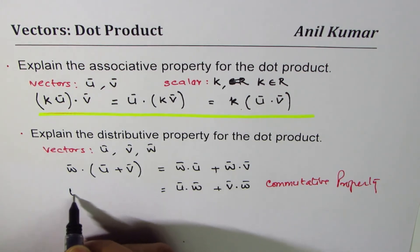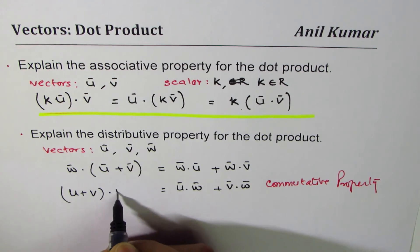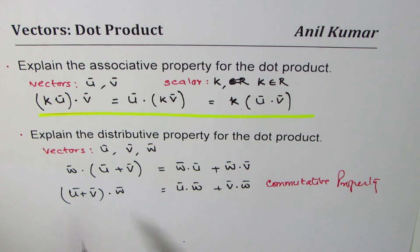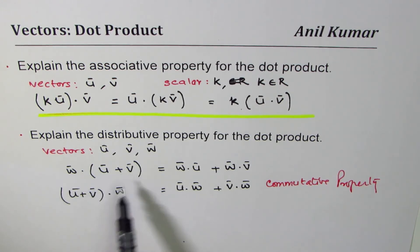That (u+v)·w - the distributive property says that the dot product of a vector with sum of the other two could be written as shown here. That is the distributive property for the vectors. I'm Anil Kumar and I hope that helps.